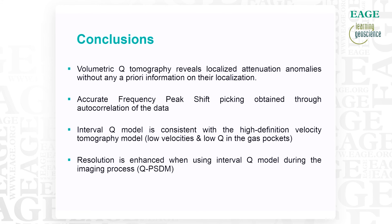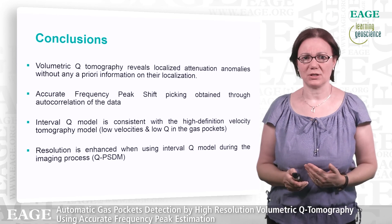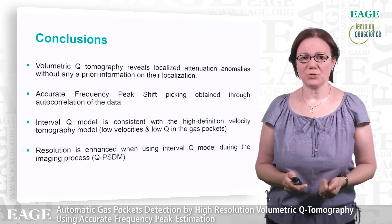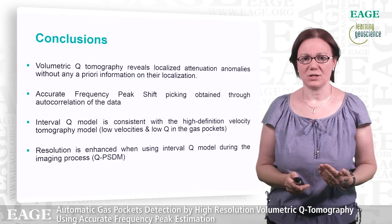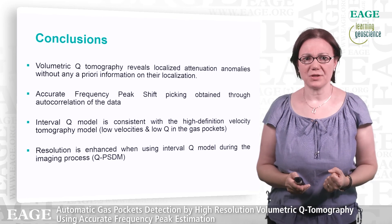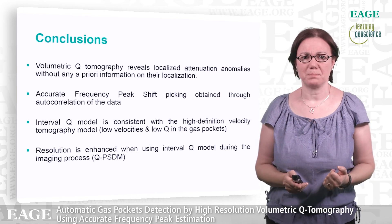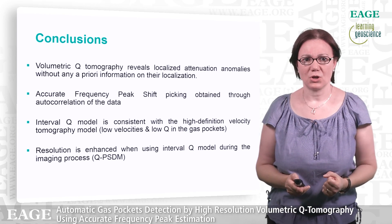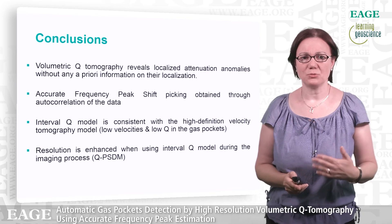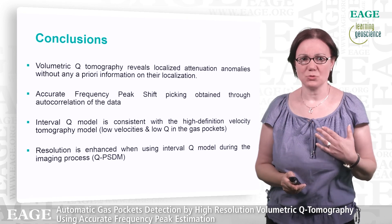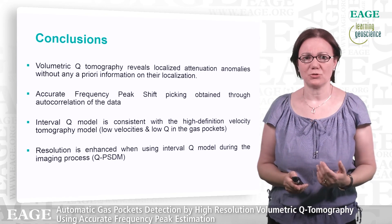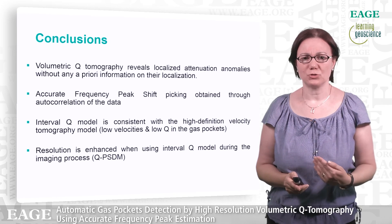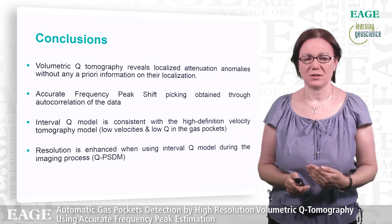We showed that the volumetric Q tomography automatically reveals localized attenuation without any a priori information on their localization and without any constraint on the tomography. This was possible thanks to accurate frequency peak shift peaking obtained through autocorrelation of the data, using spectra computed on the autocorrelation of the data instead of computing spectra on the data itself.